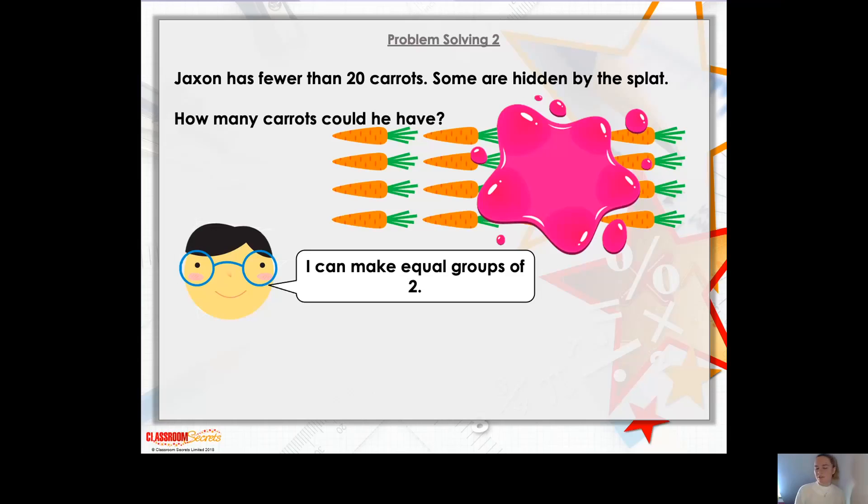He's given us a little clue here. He says I can make equal groups of two with my carrots. Now let's count how many carrots we can actually see. We can see the first column of four and the second column of four. So that's eight carrots. And then we can see the last column of four. So that's 12 carrots.